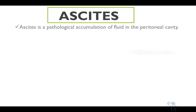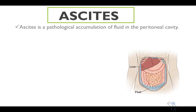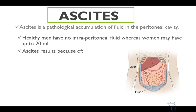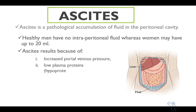Ascites is a pathological accumulation of fluid in the peritoneal cavity. Healthy men have no or minimal intraperitoneal fluid, whereas women have up to 20 milliliters depending on the phase of their menstrual cycle. Ascites results because of increased portal venous pressure, reduced plasma proteins known as hypoproteinemia, chronic peritoneal irritation, leakage of lymphatic fluid into the peritoneum, or fluid overload.